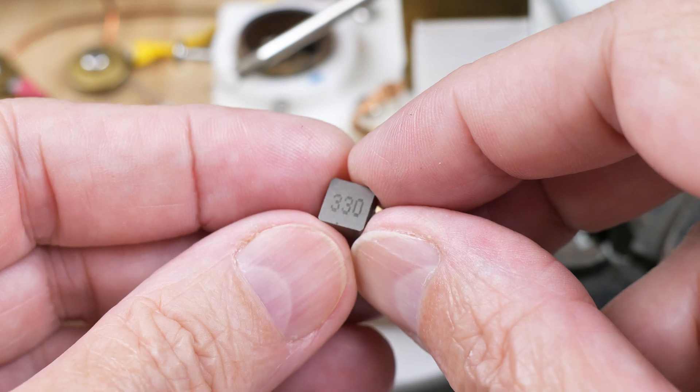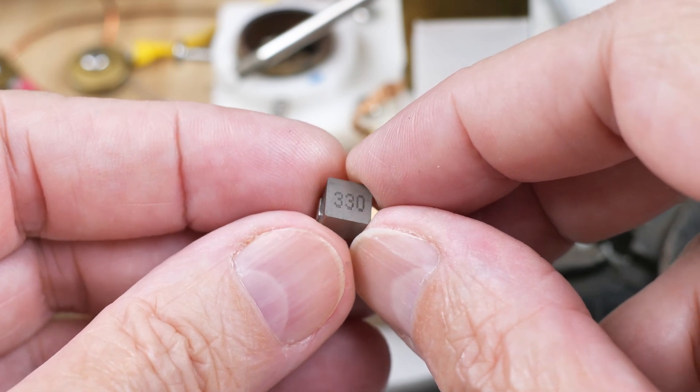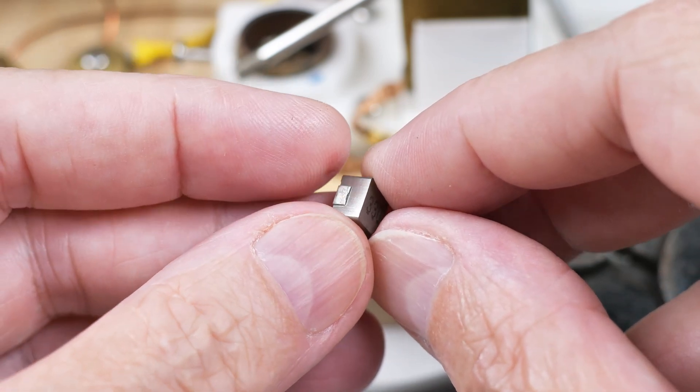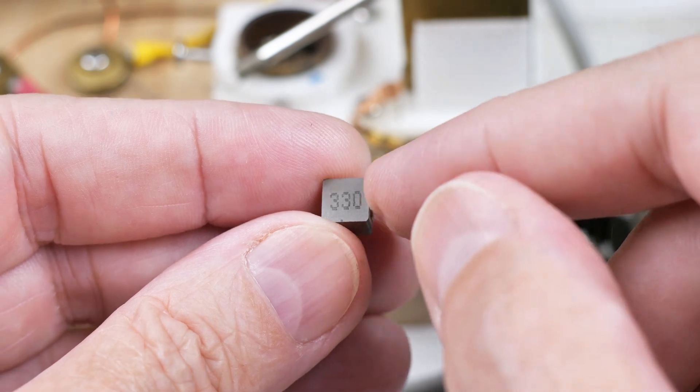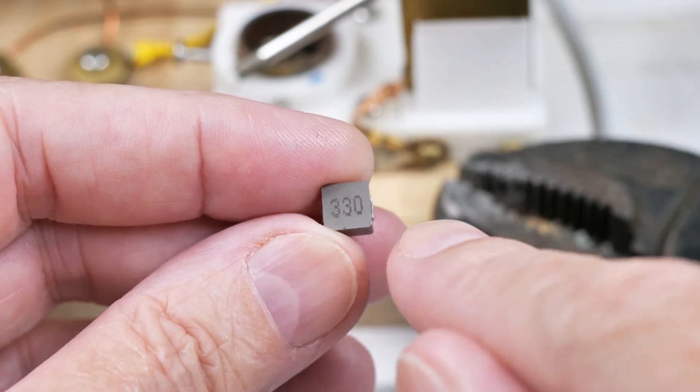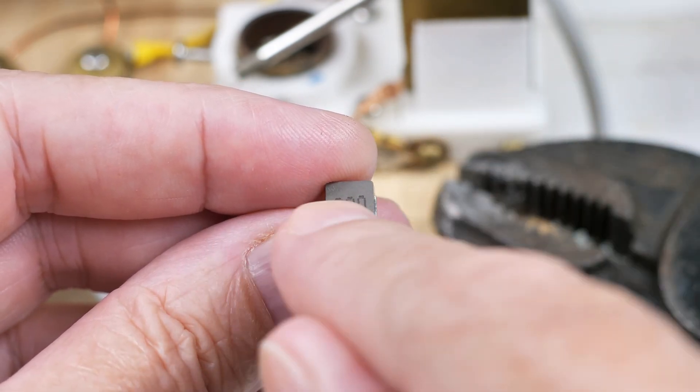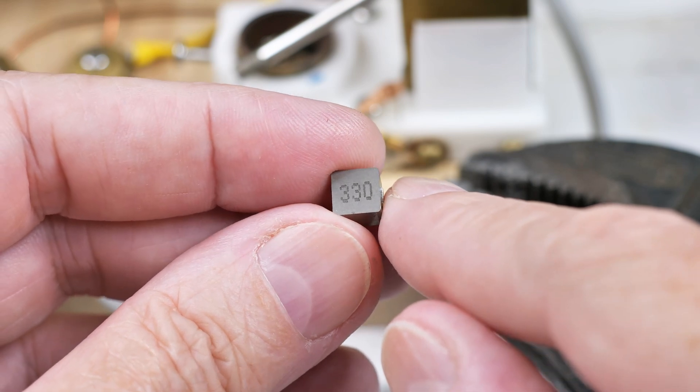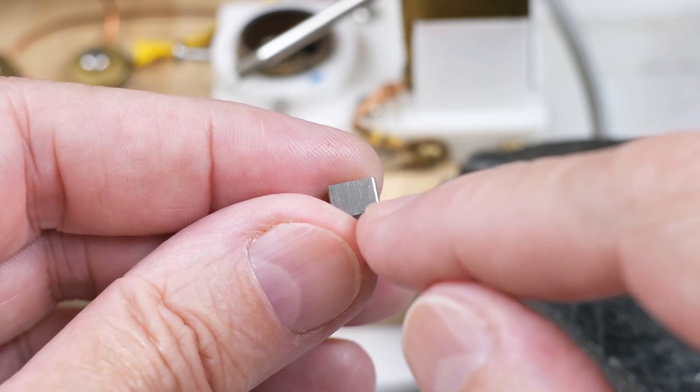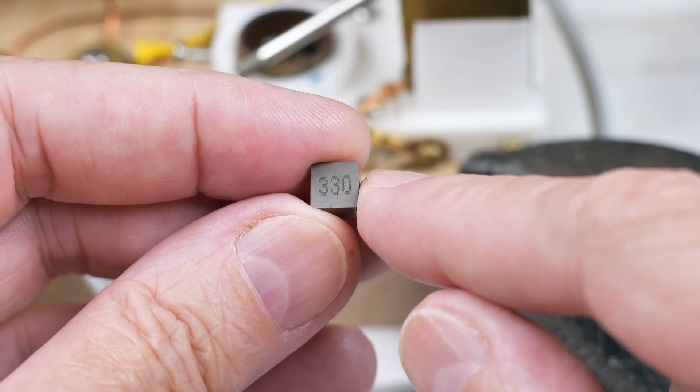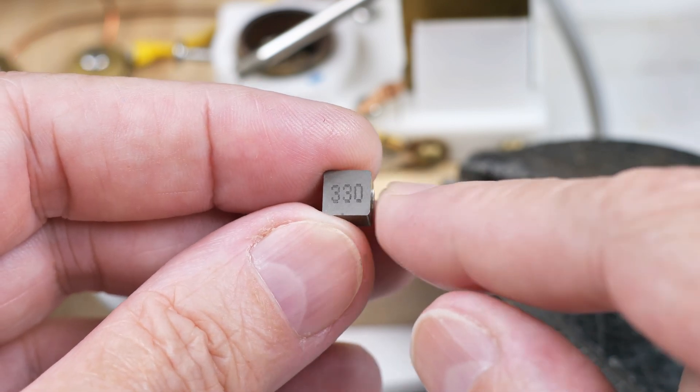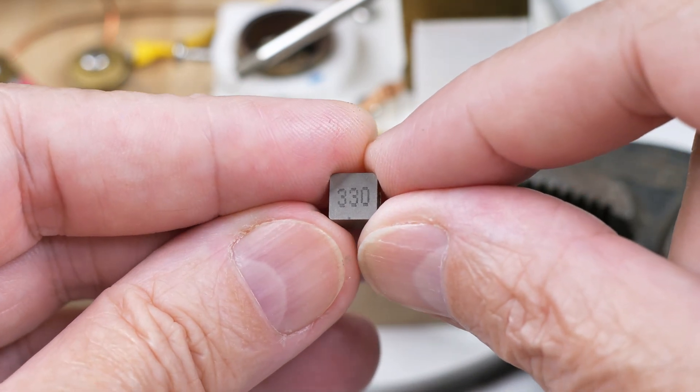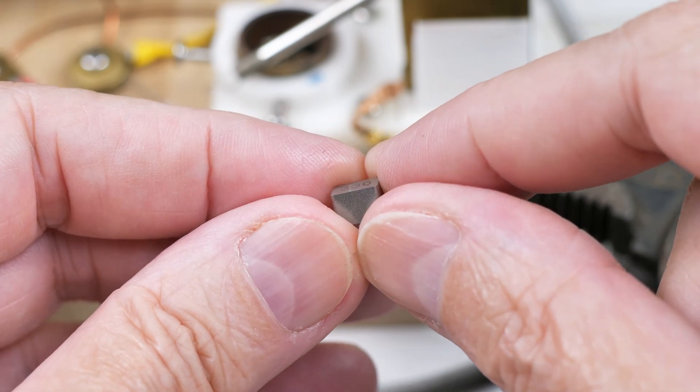One of the questions that kept popping up in the comments section is, do I have the orientation of these correct? I assumed that the coil was running left to right as we are looking at it right now. But some people brought up the fact that it may be running from bottom to top or top to bottom. The real answer is that we need to open up one of these and take a look inside.